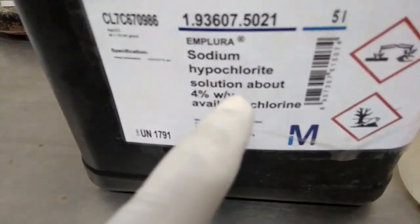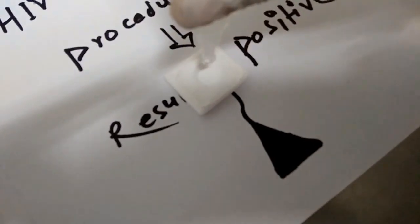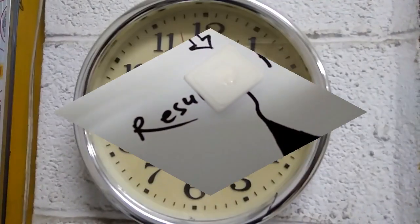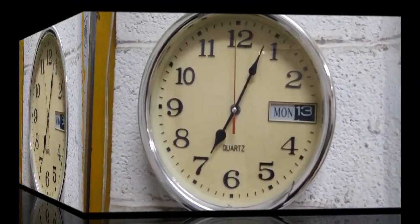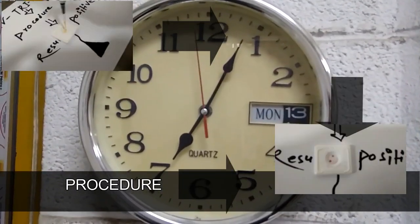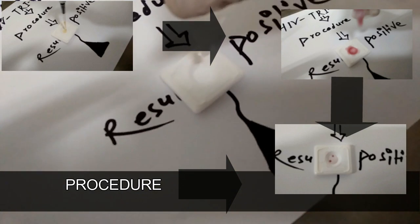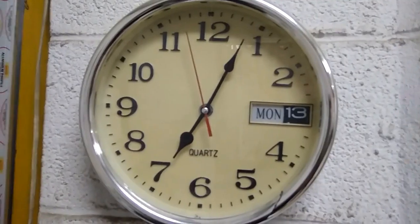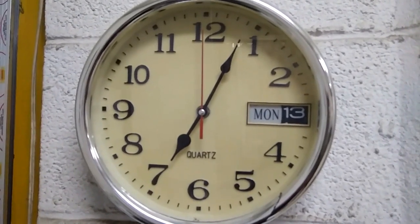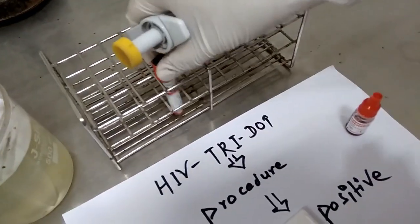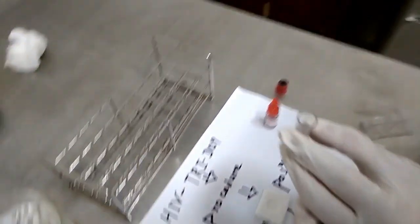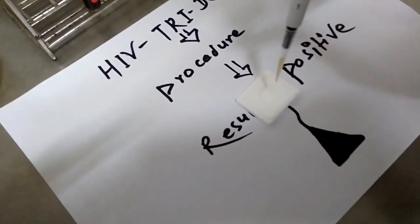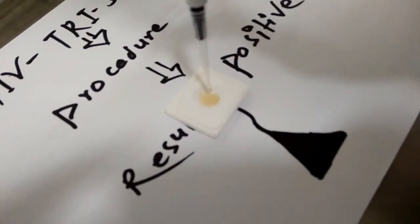Let's proceed with the procedure. Put three drops of buffer on the well and leave it to dry. Add one drop or 50 microliters of sample and leave it to dry.